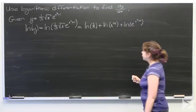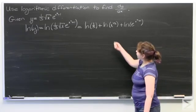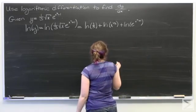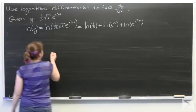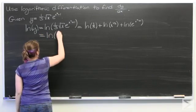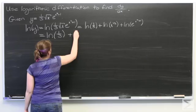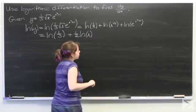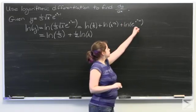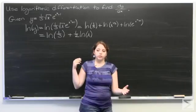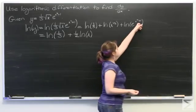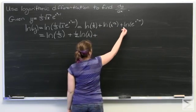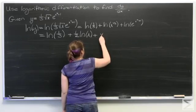Now, another thing we know is, again using logarithmic rules, the natural log of x to the one half is the same as one half times ln of x. So let's rewrite that: natural log of one third, plus one half times the natural log of x. And we also know that the natural log of the exponential function to some power is just that power, so ln of e to the x squared plus one becomes x squared plus one.